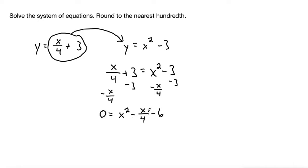From here, when I'm solving a quadratic equation, I like to clear any fractions. So I'm going to multiply both sides of the equation by 4. 4 times 0 is 0.